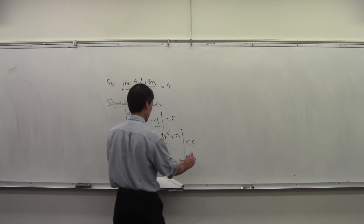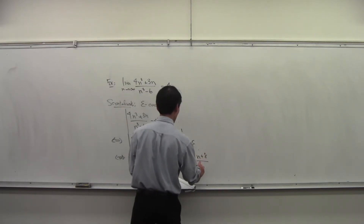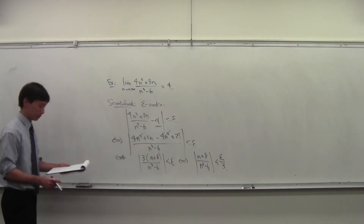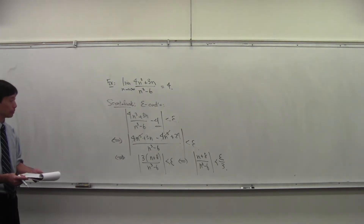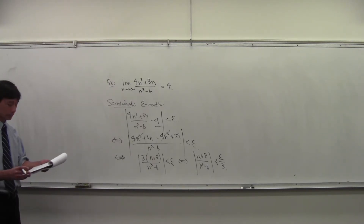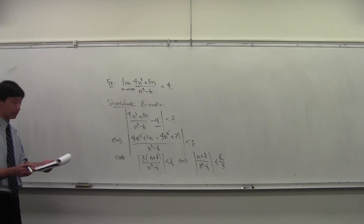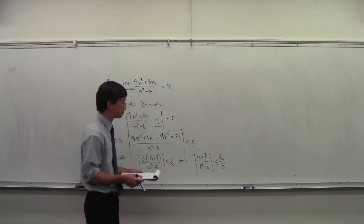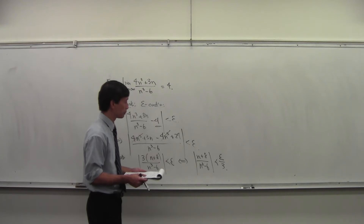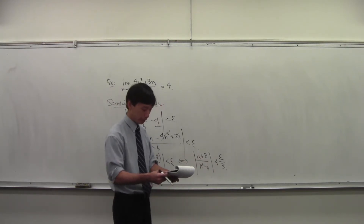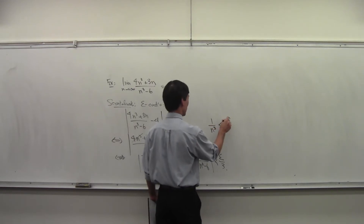You do some algebra: put the minus 4 into the fraction, the 4n³ terms cancel, and you end up with (3n+8)/(n³-6) < ε, which is the same as |3n+8| / |n³-6| < ε. You'd like something like 1/n³ < ε/3 because then you just multiply by n³, divide by ε, and take the cube root.